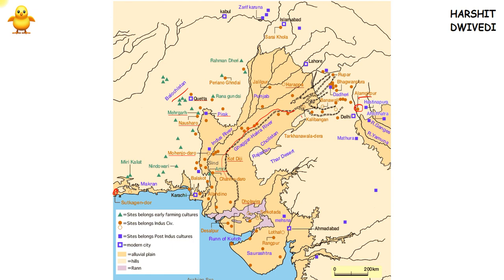In the north, Indus Valley civilization extended up to Afghanistan, and in the south it extended up to Maharashtra. Some excavations have suggested it may have reached as far as Karnataka, but that is not confirmed. 1,400 settlements of this civilization have been excavated so far, and almost all were on river banks.